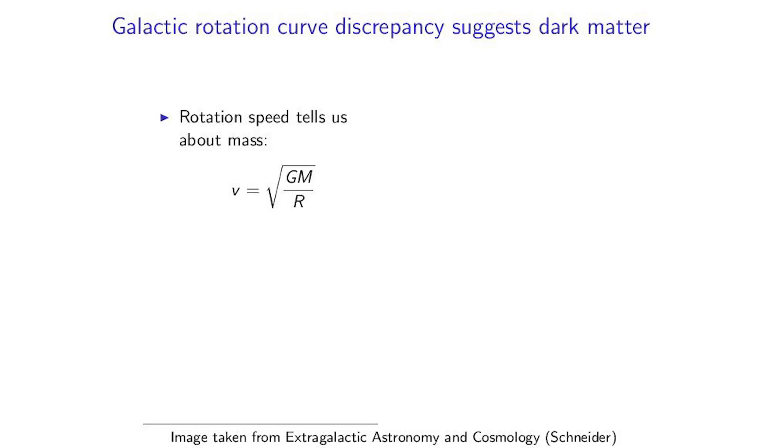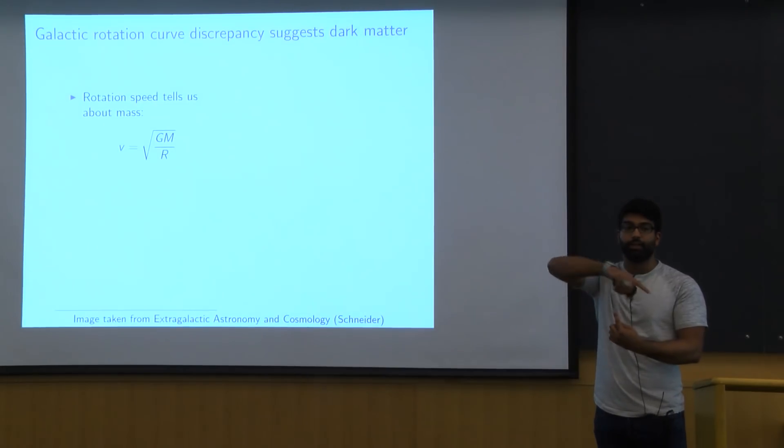So first off, why do we care about galactic rotation curves? Basically, rotation speed can tell us about mass. We know this from simple Newtonian mechanics. If you have a planet going around a Sun, then its velocity is given by this equation, where m here is the mass of the Sun. In our case, since we're working with a galaxy, we have spread out mass. This m is actually going to correspond to basically the mass contained within the orbit.